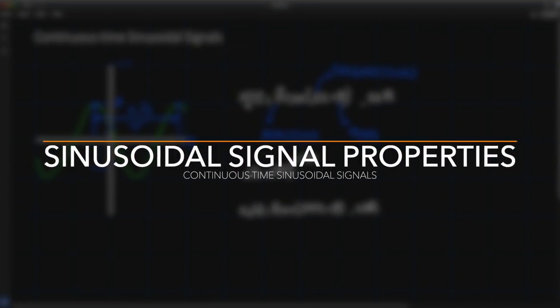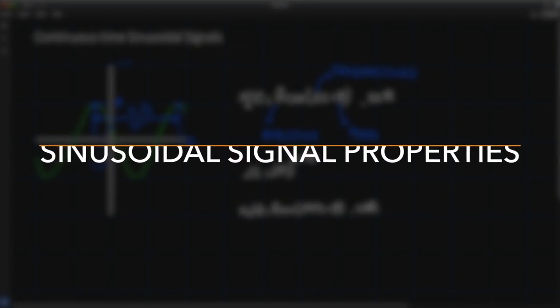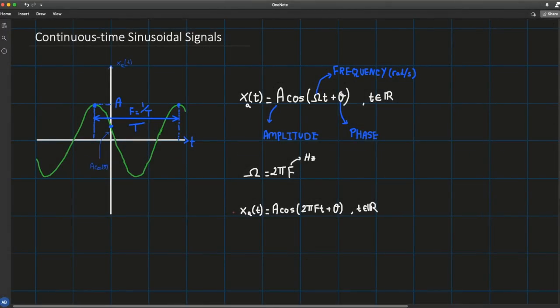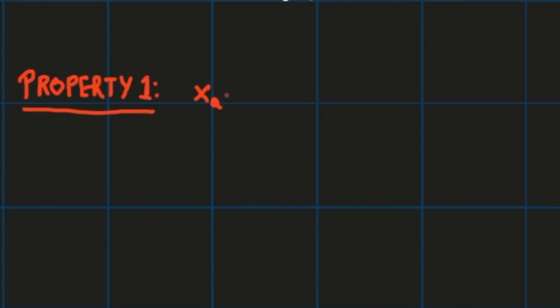From this analog definition we can draw some important properties. Property one: if you evaluate x_a at time t plus the period T, it equals x_a at time t. You can prove this by plugging t+T into the formula, using the fact that f·T = 1, and then applying the identity cos(x + 2π) = cos(x).